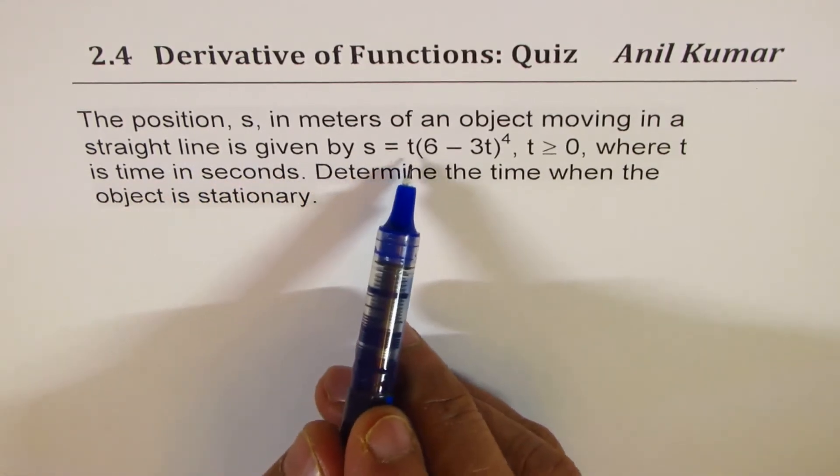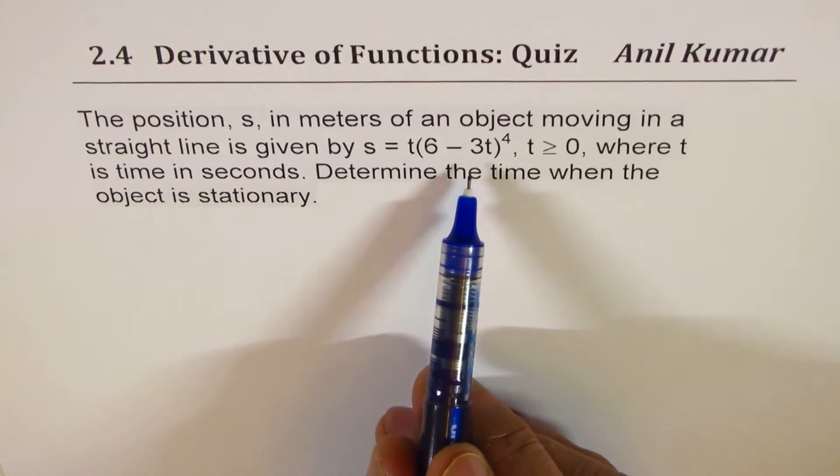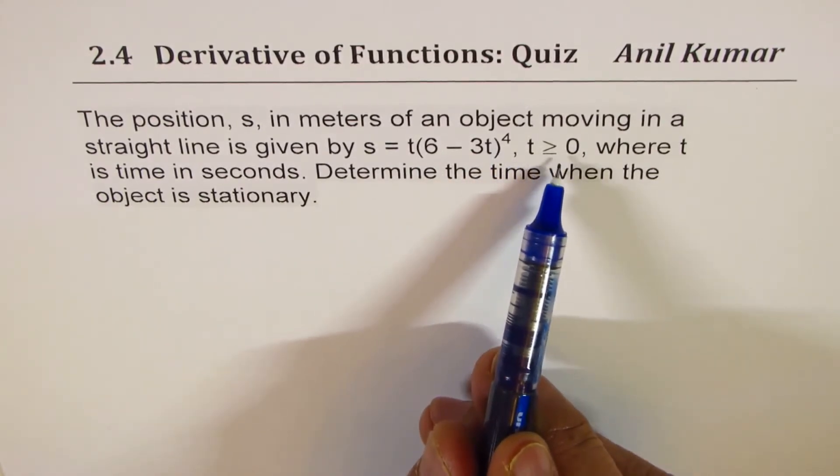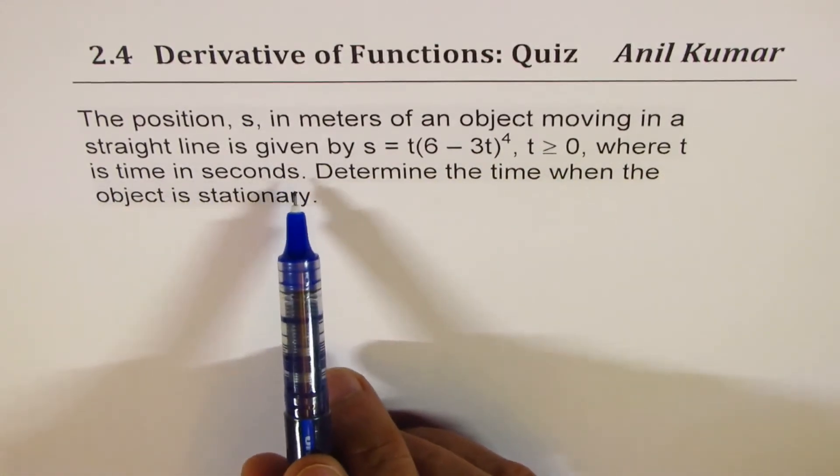s equals t times 6 minus 3t to the power of 4 where t is greater than or equal to 0, where t is time in seconds.